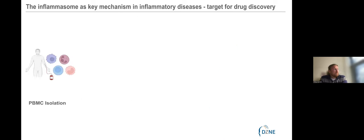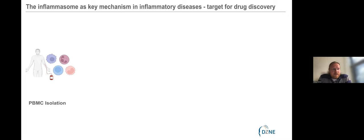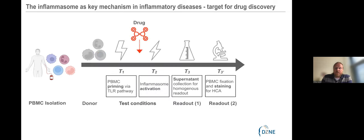We chose monocytes as our hub, going for primary cells — PBMCs directly isolated from human donors. We decided to take all the readouts: image-based readouts plus homogeneous readouts, and combine both approaches at the end for a multi-parametric readout. The PBMC model is already a complex cell model — not a homotypical model consisting of just one cell type, but a heterotypical cell model with monocytes, T cells, B cells, neutrophils, and other blood cells. We decided not to separate them but keep them together since these cells can interact with each other.